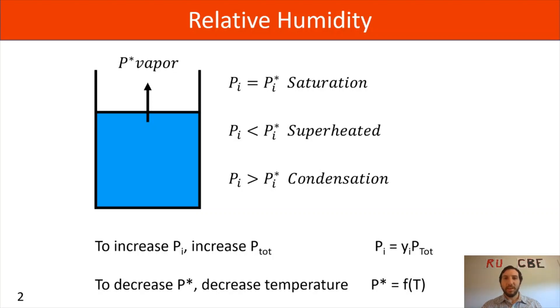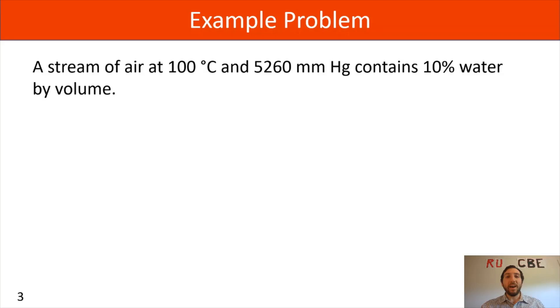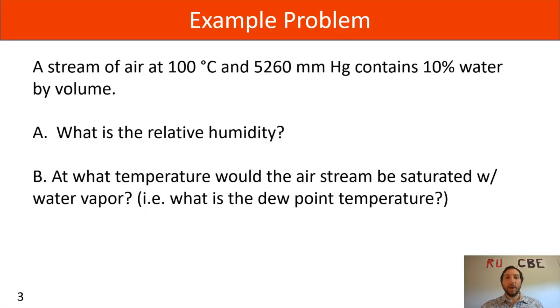Now we're going to do this example problem where I have a stream of air at 100 degrees Celsius and 5260 millimeters of mercury containing 10 percent water by volume. What I'd like you to do is figure out: what is the relative humidity, at what temperature would the air stream be saturated with water vapor (that's asking what is the dew point temperature), and what are the degrees of superheat for the system.